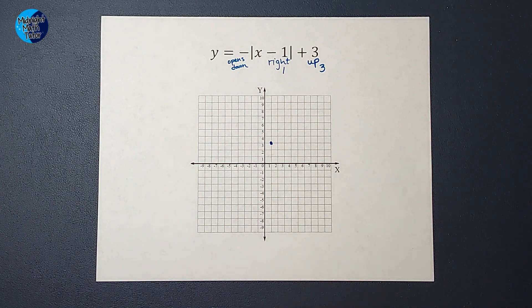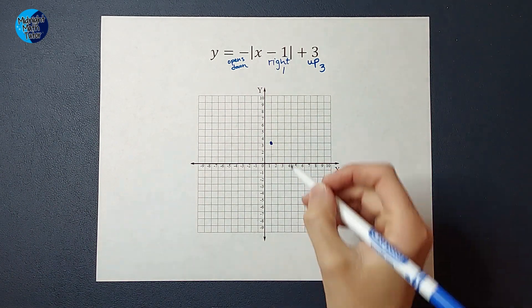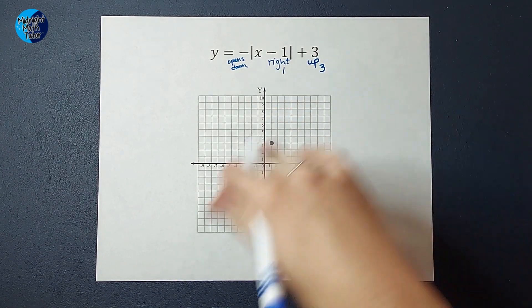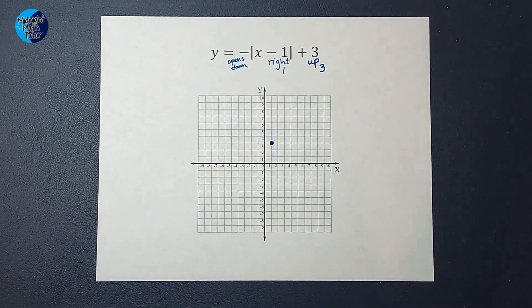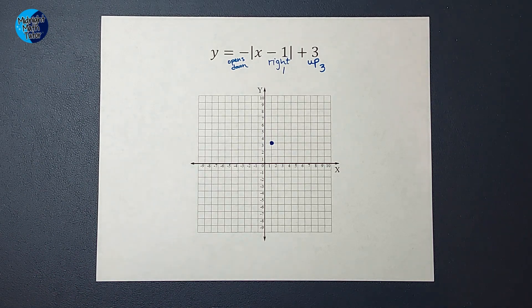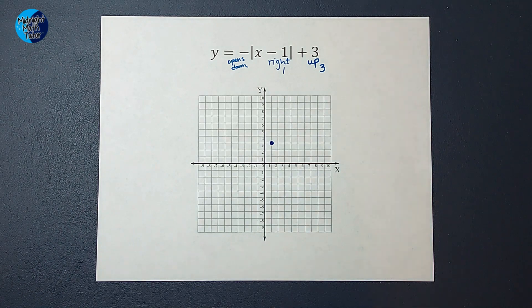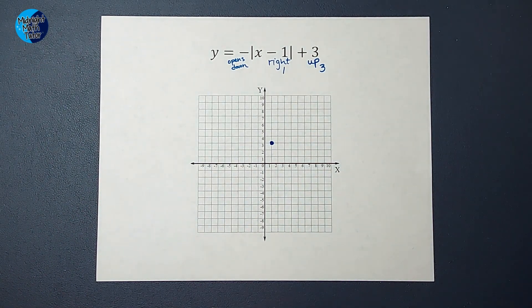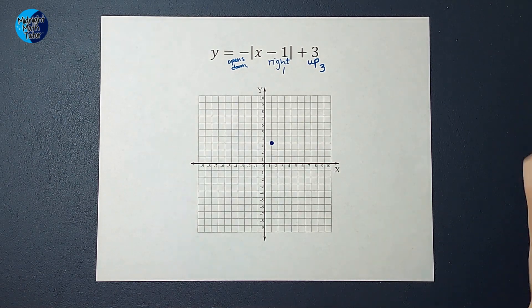Now, there might be some teachers that at this point, all they want to know is that you know where the new vertex is, and in this case, you know it opens down. That might be all they really care to know right now. But if your teacher wants more information than that, they kind of want to know that you know the shape of the V, then we can plug in some points to figure out the general shape of the V.